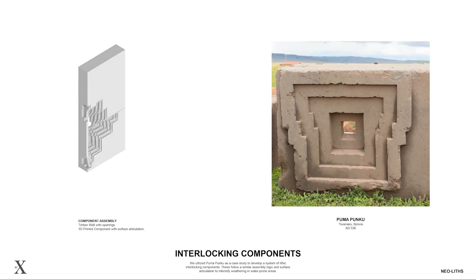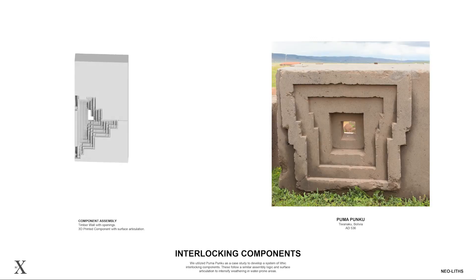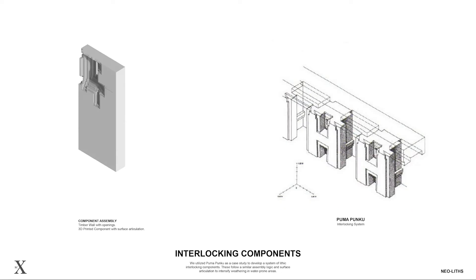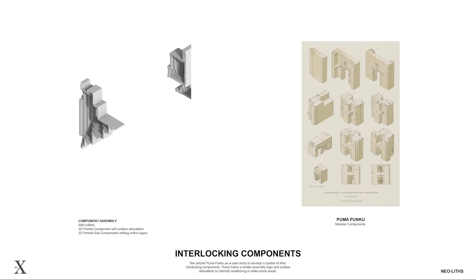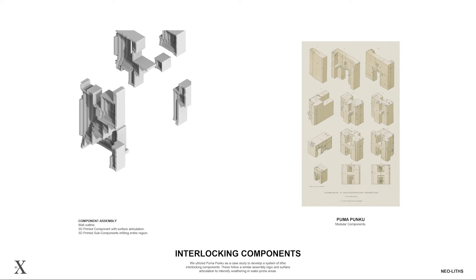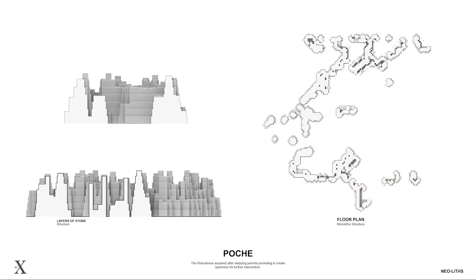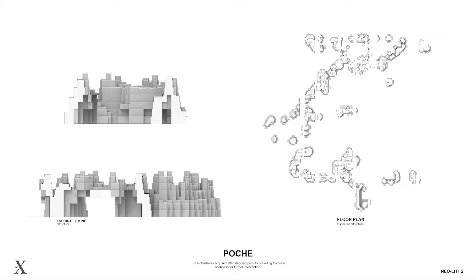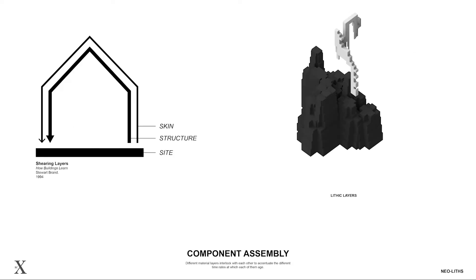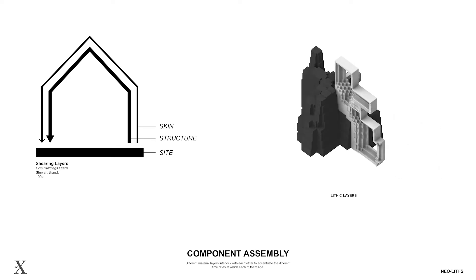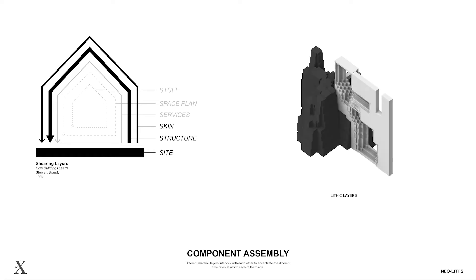We developed a system of interlocking lithic components that resemble the assembly logics of the stone structures found in Pumapunku, where similar non-identical members form larger megalithic structures. This logic allows for variable configurations and multi-materiality, promoting future intervention on the skin. This allowed us to open the structure from within, to create pocketed spaces such as the ones observed in the ancient lithic structures that influence our logic. Our tectonic system integrates structure, quarried stone deployed on site, and 3D printed stone components with high resolution texturing, that operate as the skin of the building. This assembly of parts emphasizes the interaction of different material layers in the building and allows for future replacement and intervention.